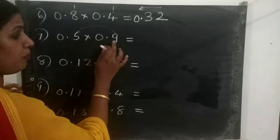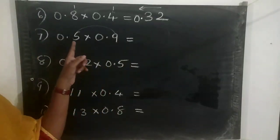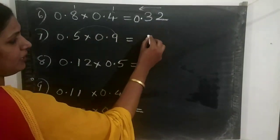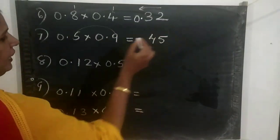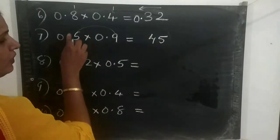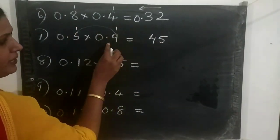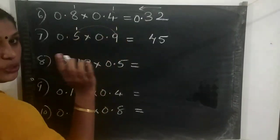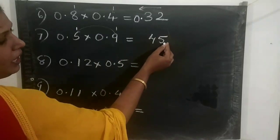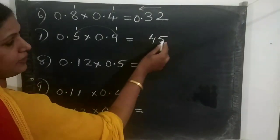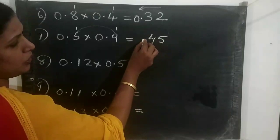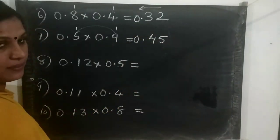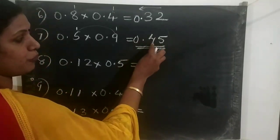Next we multiply 0.5 into 0.9. We multiply these two numbers: 5 nines are 45. After each decimal point there is only one place, so the total number of places is 2. We count from right to left — 1, 2 — put a point and a leading zero. The answer is 0.45.